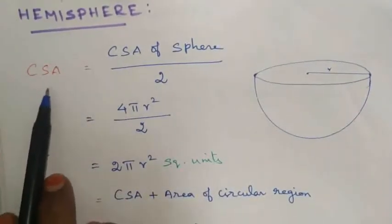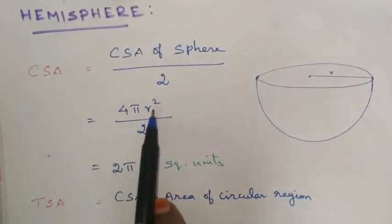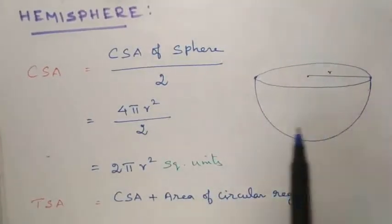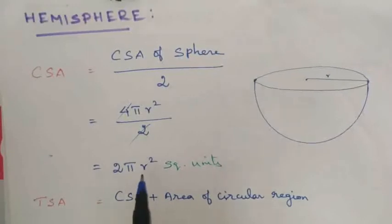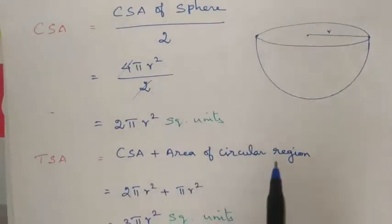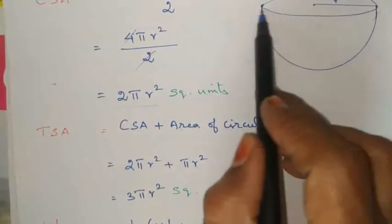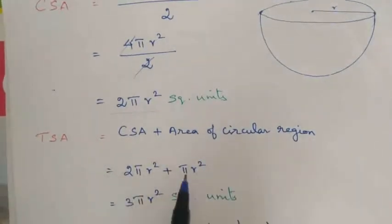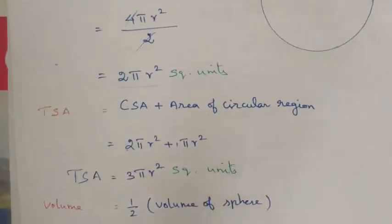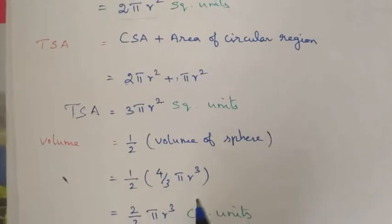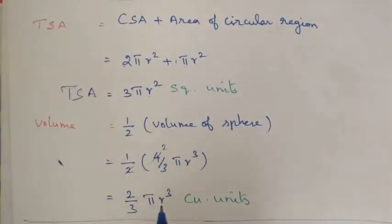Hemisphere: The CSA of a hemisphere is 2πr². The TSA is CSA plus the area of the circular base: 2πr² + πr² = 3πr². The volume is half the volume of a sphere: (1/2) × (4/3)πr³ = (2/3)πr³.